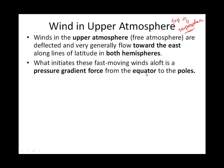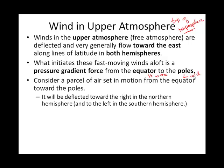Over the equator at upper elevations, we have high pressure, and at the poles we have low pressure. This has to do with the equator being warm and the poles being cold. Now, this seems a little backwards because warm generally means low pressure and cold means high pressure — but we're talking about conditions aloft. You're going to see a pressure gradient force from the equator towards the poles, and then deflection in the upper atmosphere is going to be to the right.